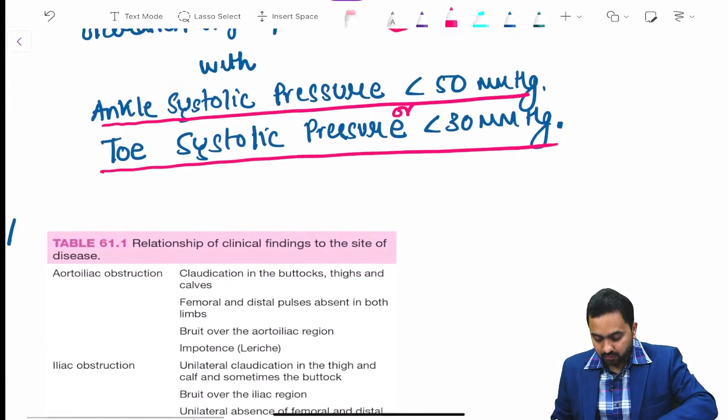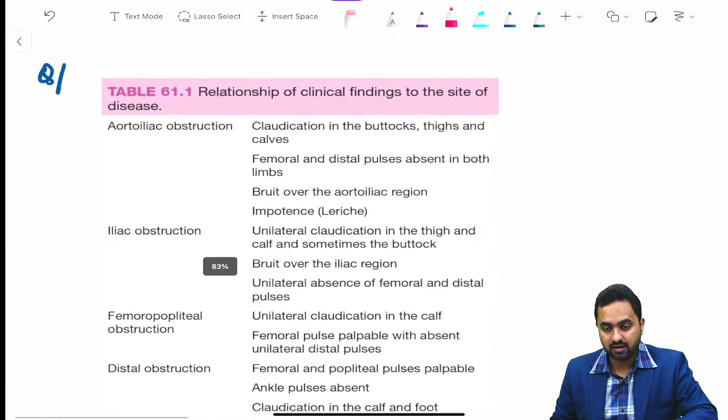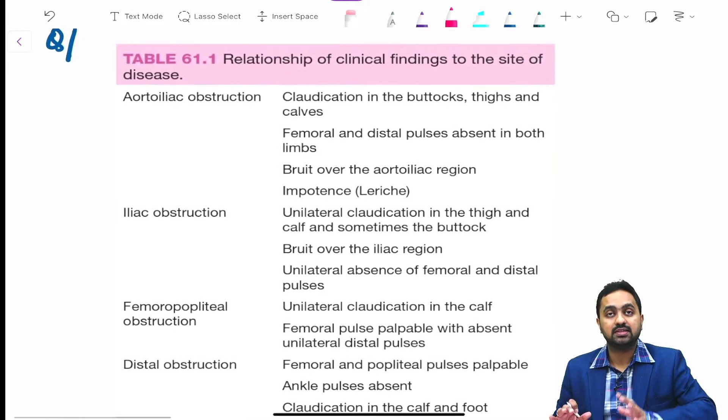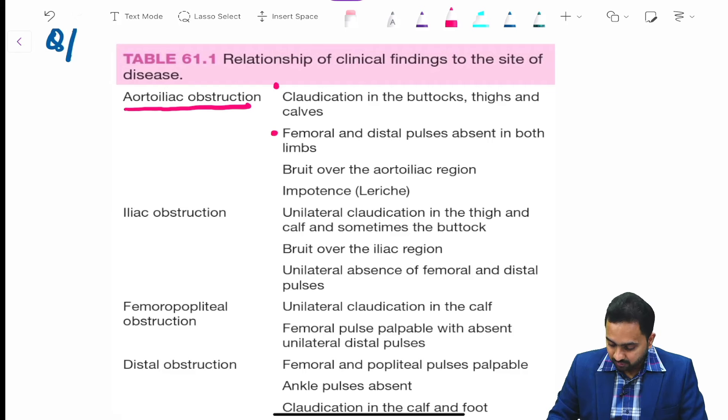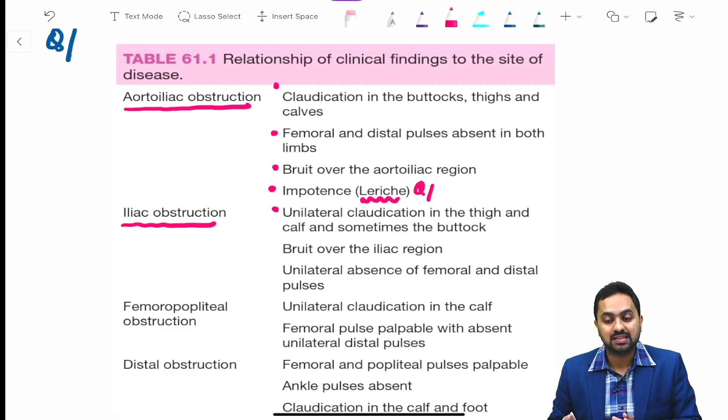Moving to the relationship of clinical findings to the site of obstruction. In aorto-iliac obstruction, there is claudication in buttocks, thigh and calves, femoral and distal pulses absent in both limbs, bruit over the aorto-iliac region, and impotence which is Leriche syndrome. In iliac obstruction, unilateral claudication in thigh and calf and sometimes buttock.